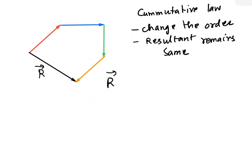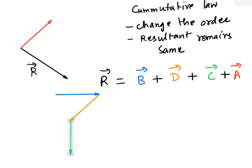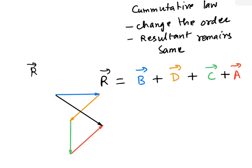So let's say r vector equals b vector plus d vector plus c vector plus a vector. First we take vector b, then we add vector d, then vector c, and finally vector a. If we then draw the resultant r vector, you can see it still fits perfectly. So the order of vector addition is not important — all that matters is that we add them head to tail.